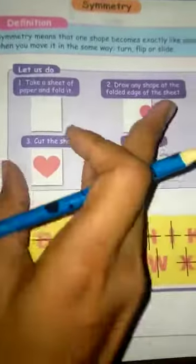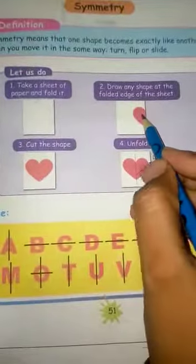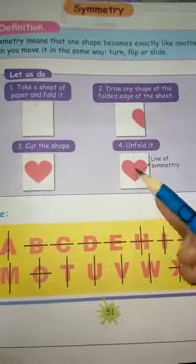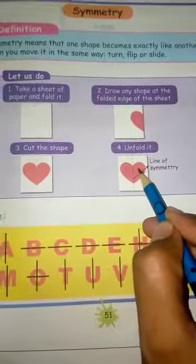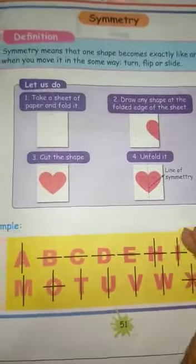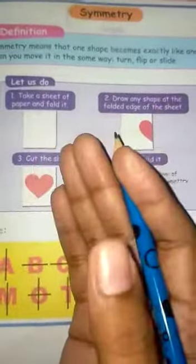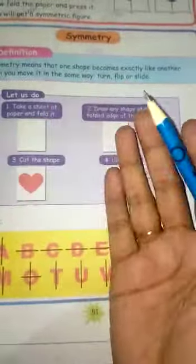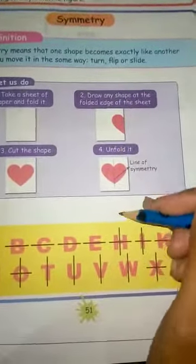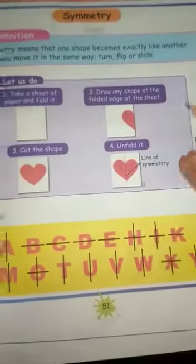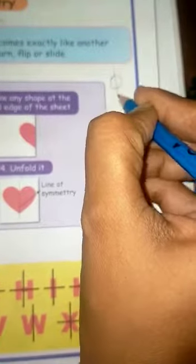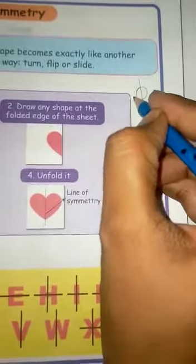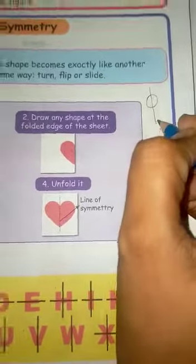When you fold the paper in one side, both halves match — this is the symmetric line. Now, draw a circle. When you fold the circle on one side, the two halves match. This is symmetry.